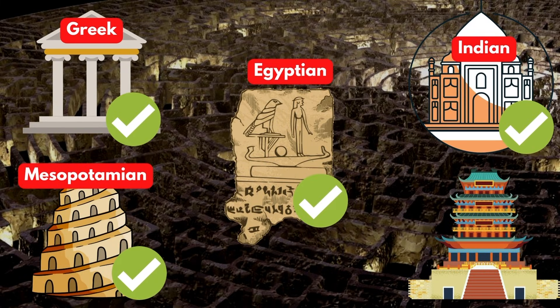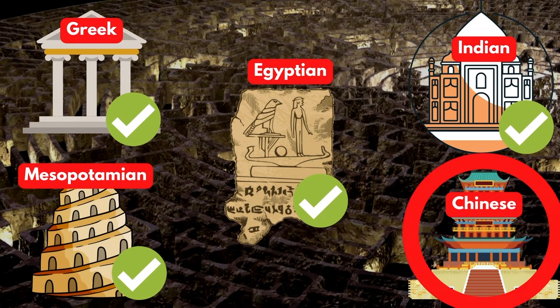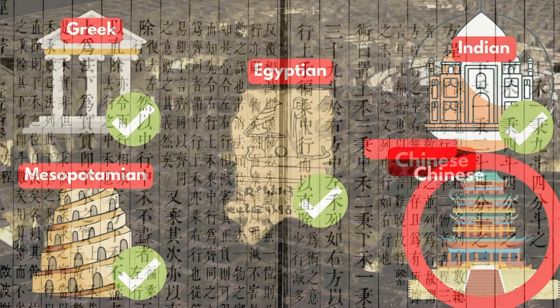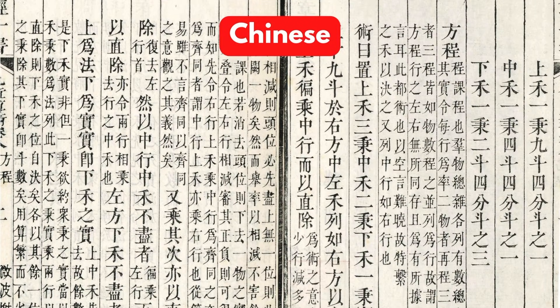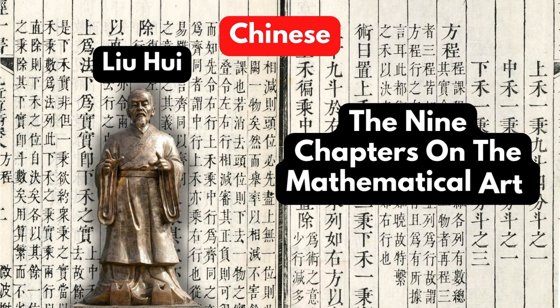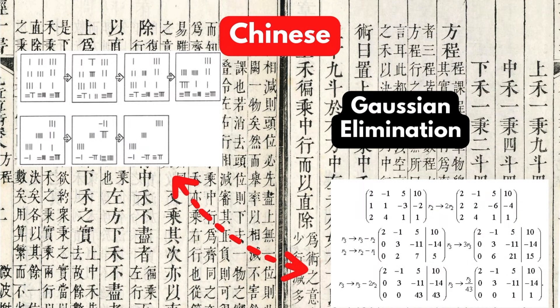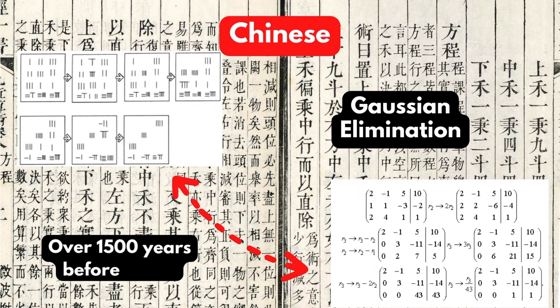And now moving even further east to the Chinese civilizations, we have seen many major developments. These are typically presented in an anonymous collective of results, the most influential of which is the Nine Chapters on the Mathematical Art. Compiled by Liu Hui, it presented advanced concepts such as Gaussian elimination over 1500 years before Gauss, and other techniques such as Horner's method.